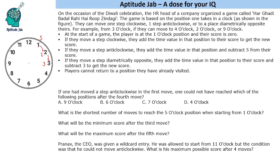If you move anti-clockwise, you add the time value and subtract five from your score. So if you are at one and go to twelve, you get twelve minus five, which is seven points. Going to eleven gives six points, and to ten gives five points. Initially this may be beneficial, but with multiple movements the score may decrease.